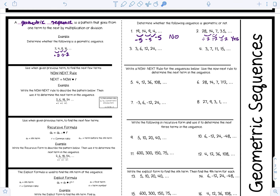In this next section we're going to talk about the Now-Next rule — how do we write a rule to represent these geometric sequences? We need to find what we call a common ratio. To find the common ratio, we take a2 and divide it by a1. So here we have 6 divided by 2, which equals 3. This tells us how to go from one term to the next — we multiply by 3.